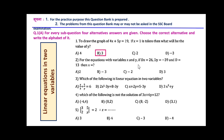For the equation with variables x and y, if Dx = 26, Dy = -39, and D = 13, then x = ? Here, to find the value of x, x = Dx / D. So Dx is 26 and D is 13, and 26 / 13 = 2.